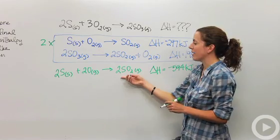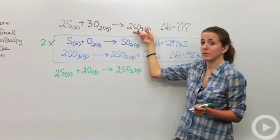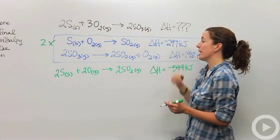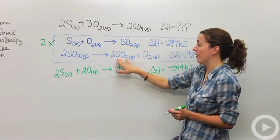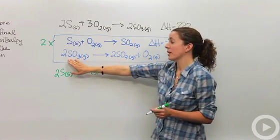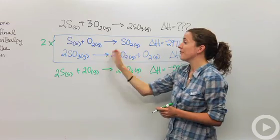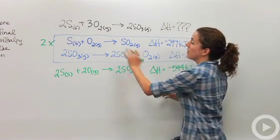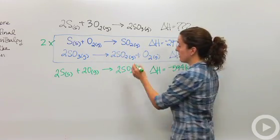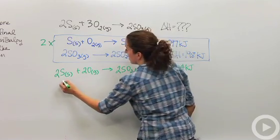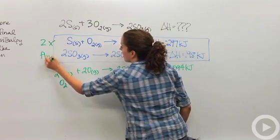But now I have sulfur dioxide on my product side and I don't want it. I want sulfur trioxide. So I'm going to look at this reaction here. Well, here's sulfur dioxide on the product side and sulfur trioxide on the reactant side. So I actually want to flip those around, so I'm going to do the reverse reaction. So I'm going to say oxygen gas, I'm going to make sure I note that.